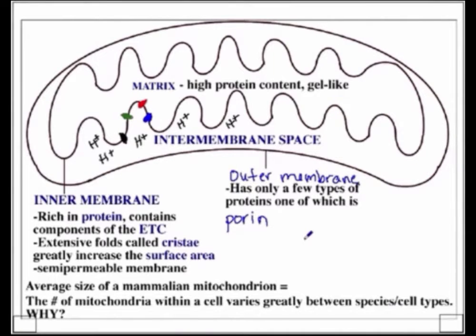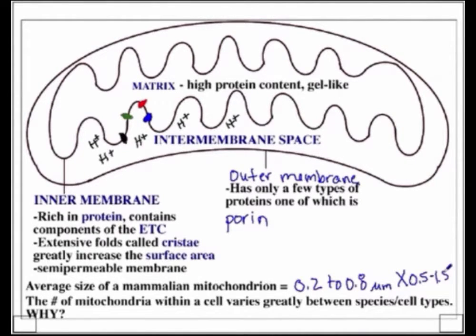The average size of a mammalian mitochondrion, like one you might see within a liver cell, is somewhere on the order of about 0.2 to 0.8 micrometers by about 0.5 to 1.5 micrometers. Many bacterial cells are around that size, so these dimensions are actually fairly supportive of the endosymbiont theory of origin for the mitochondrion.